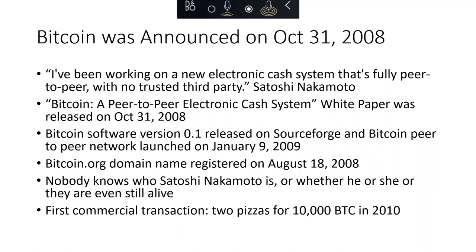Bitcoin was announced on October 31, 2008 by Satoshi Nakamoto, which is a pseudonym for the creator of Bitcoin. We don't know whether the creator is a man, a woman, or a group of people. In an internet user group, Satoshi Nakamoto introduced the Bitcoin concept with the words: 'I've been working on a new electronic cash system that's fully peer-to-peer with no trusted third party.' He attached a white paper of roughly eight pages describing his system. The Bitcoin peer-to-peer network was publicly launched on January 9, 2009.